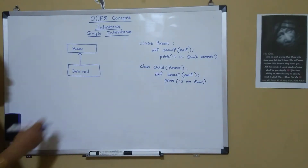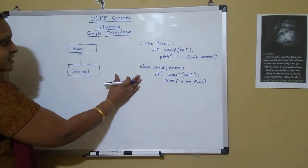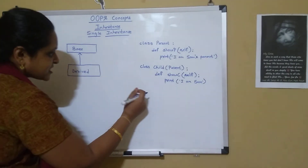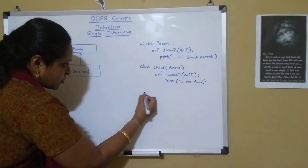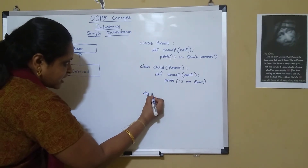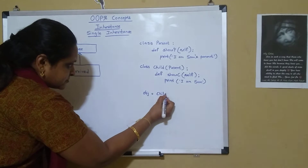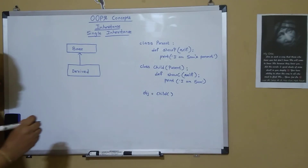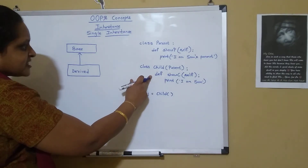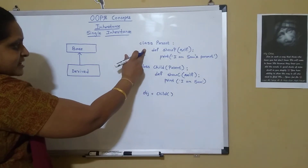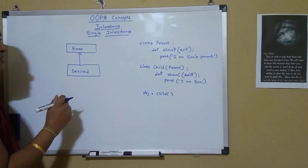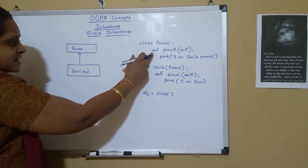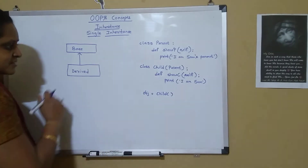When we create an object, the class will be instantiated. So let's create an object: 'obj = Child()'. When I create an object for the child, I can access the methods in both the child class and the parent class. But when I create an object for the parent, I can access only the parent methods — I cannot access the child methods.